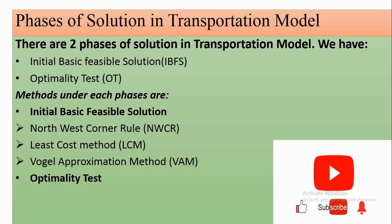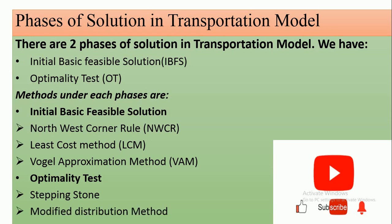The Initial Basic Feasible Solution is the first phase you have to go through whenever you are trying to solve a transportation problem. You cannot go to the Optimality Test without first obtaining an IBFS — that is one of the criteria for using the optimality test. For the Optimality Test, you have the Stepping Stone Method and the Modified Distribution (MODI) Method.